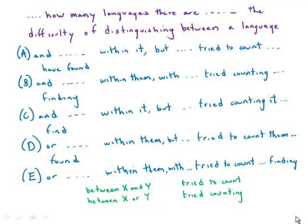This one about the number of languages on earth explores a number of idioms. So the first one I'll consider is just use of the word between. Between x and y or between x or y.